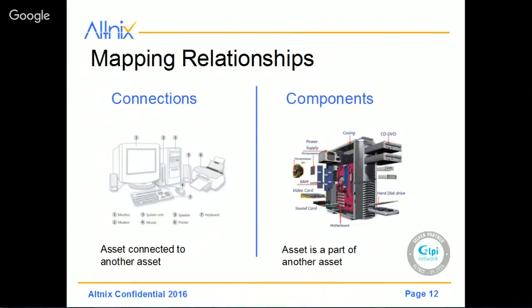There is also an interesting concept of relationships that can be defined inside the Assets module. The first one is called Connections. Here is an example where one asset is connected to another asset. If you are an end user, most likely you will have your own desktop PC, a printer, a mouse and keyboard, and maybe speakers. So all of these assets are individual assets on a standalone basis, but somehow they are all connected — either physically connected to each other, or associated to a single user. We use Connections to define how different assets are connected to each other.